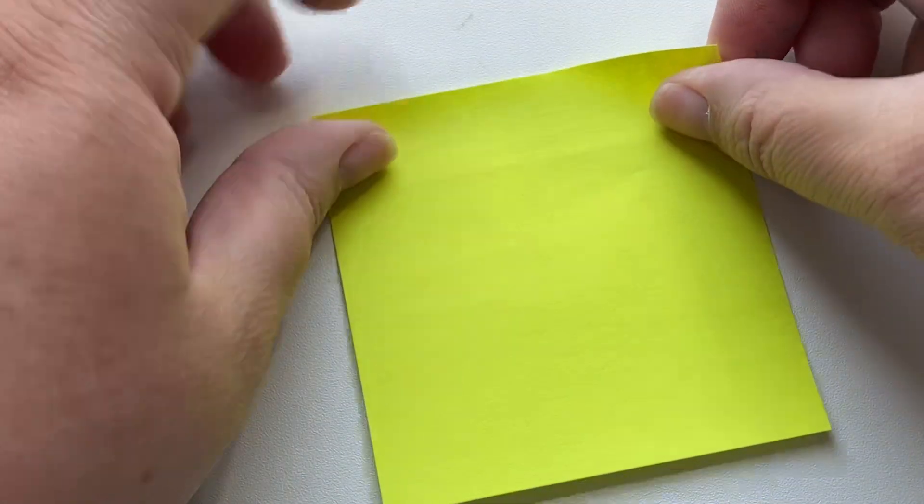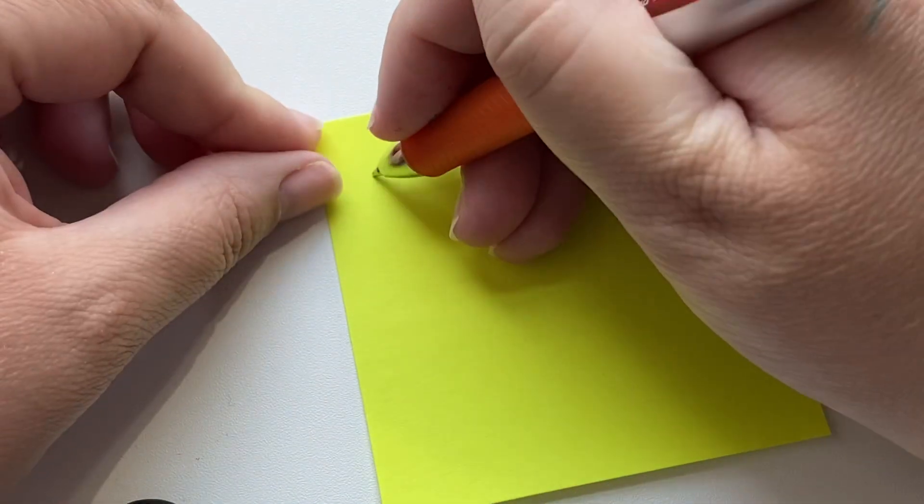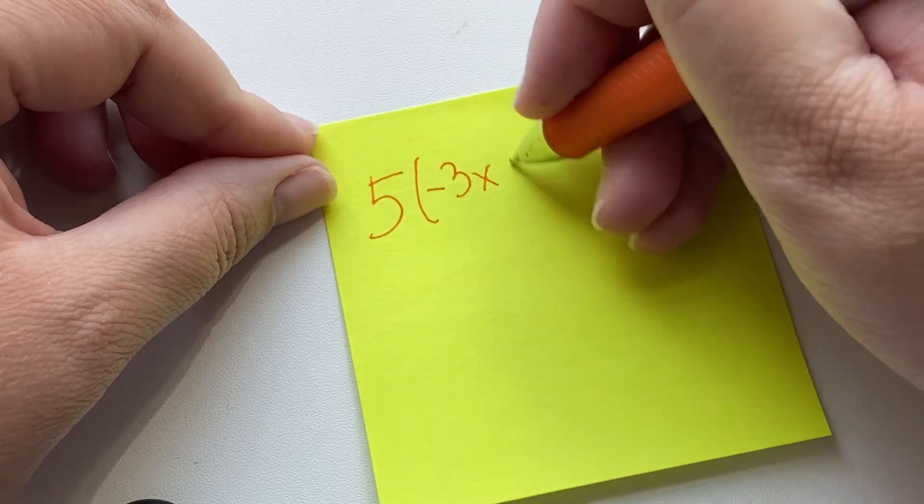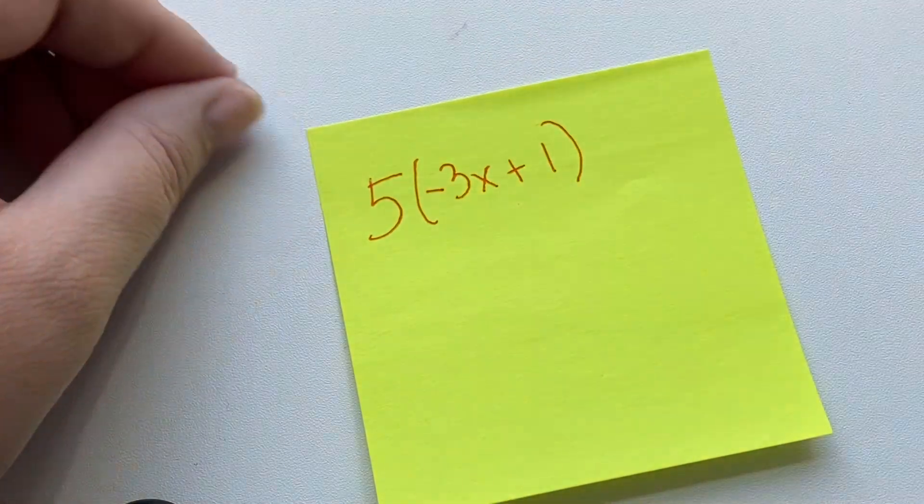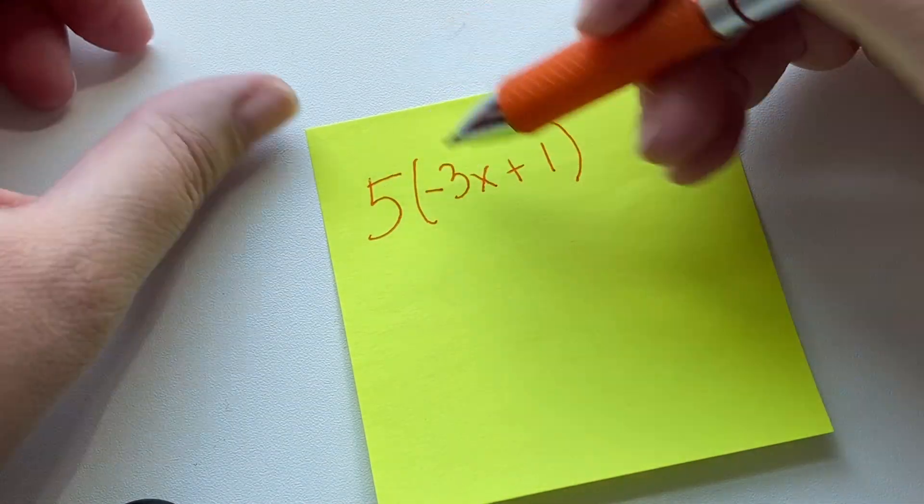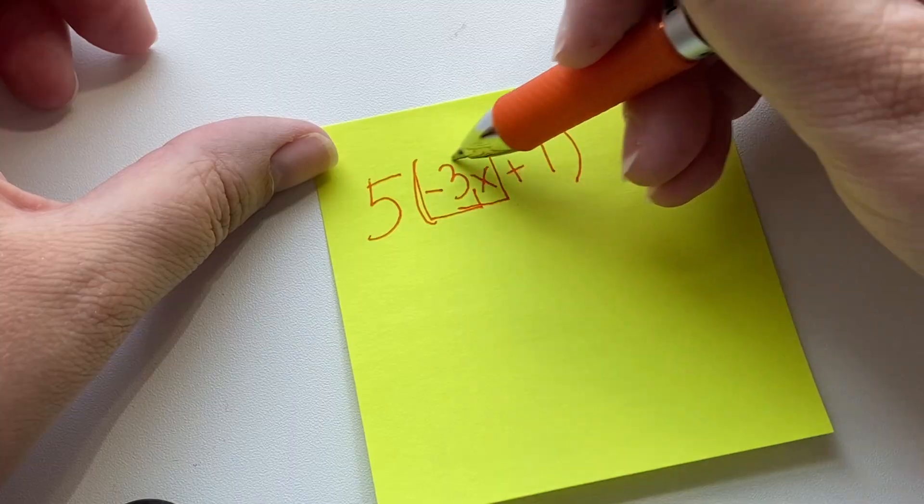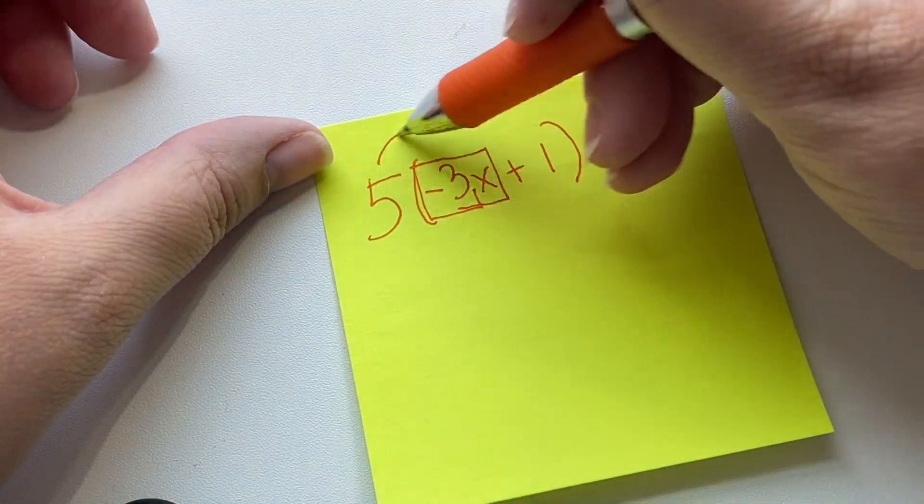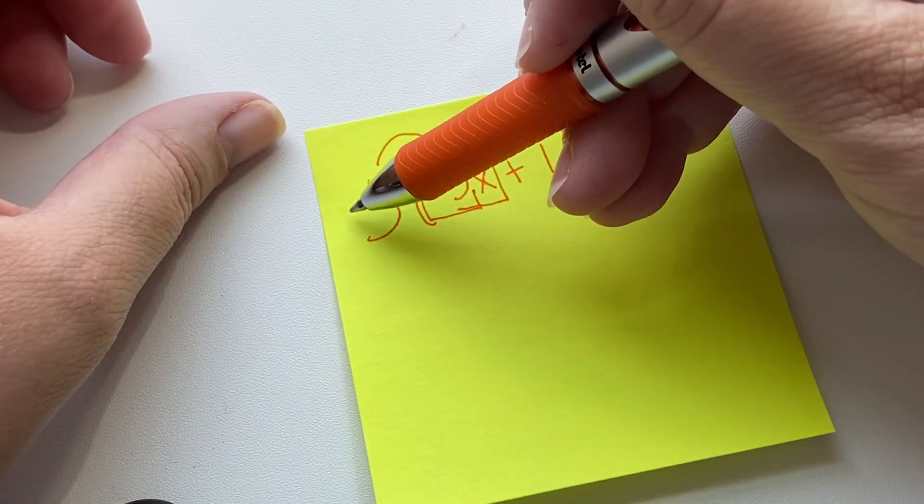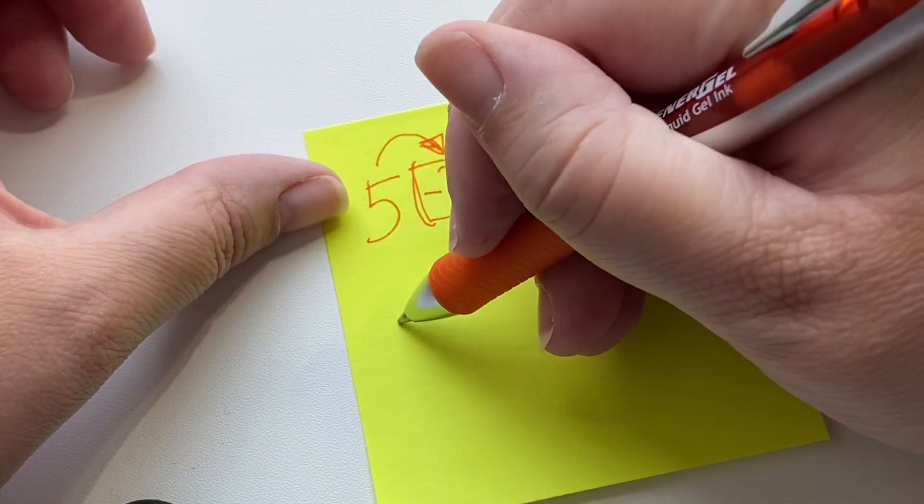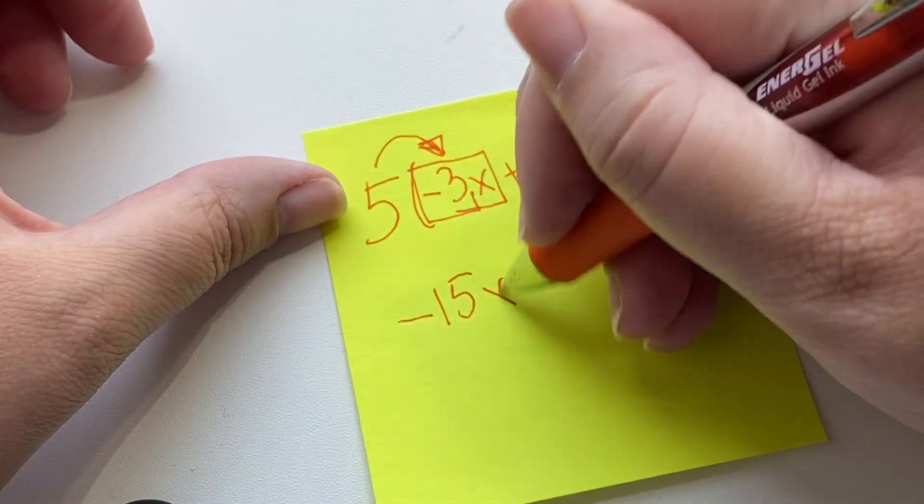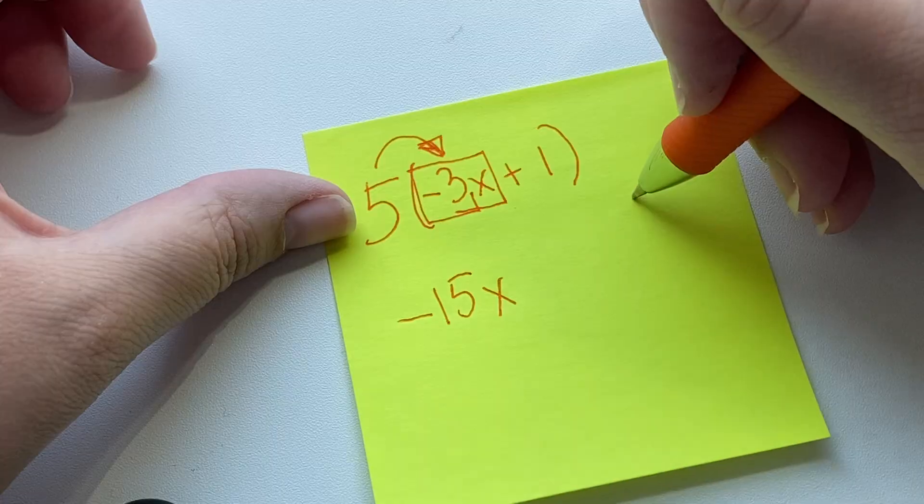Okay. So, let's do one with a 5, parenthesis, negative 3x plus 1. So, we're going to do 5 times negative 3x. Which, a positive and a negative, when you multiply them, will result in a negative. So, we get negative 15x. Remember our little triangle.